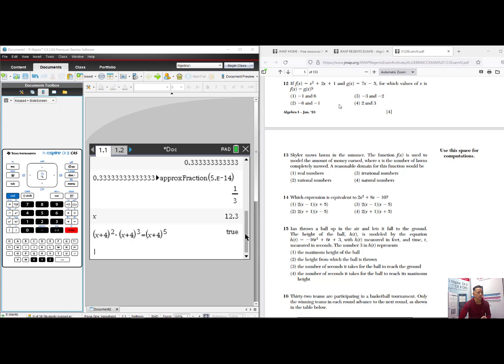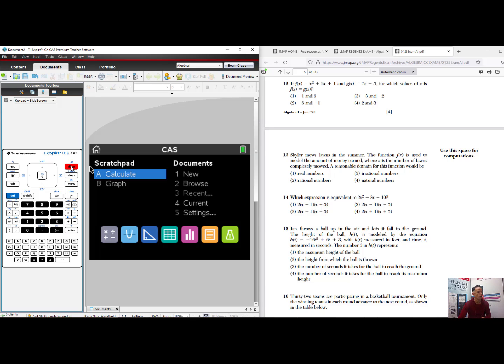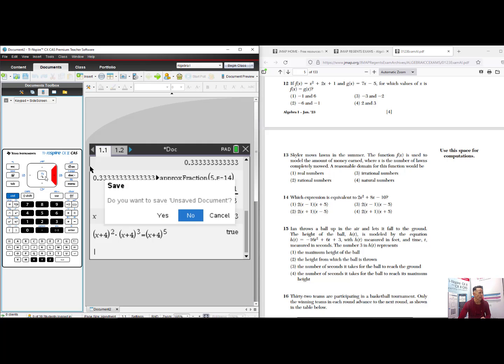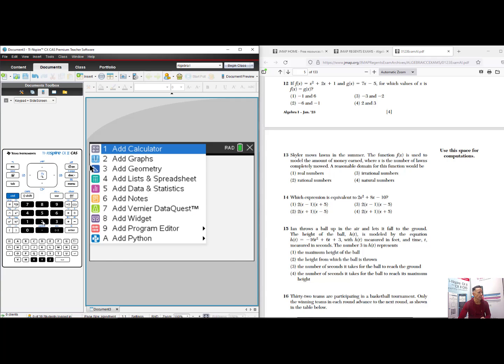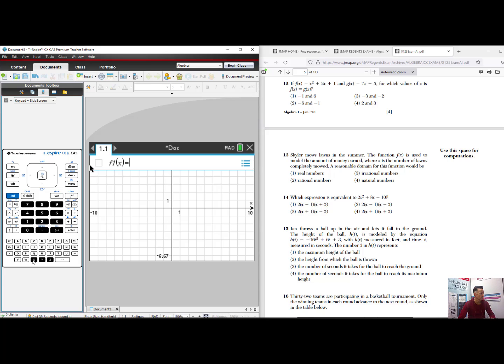Focusing our attention now to number 12. If f of x equals x squared plus 2x plus 1 and g of x equals 7x minus 5, for which values of x is f of x equal to g of x? So, I'm going to go home because there's no place like home. I'm going to select number 1, new document, and I'm not going to save what I have so far. I'm going to open up number 2, add graphs. And in f of x, I'll enter the first function, x squared plus 2x plus 1. I'll hit Tab to open up my entry line, and in f of x, I'll put in the second function, which is 7x minus 5.